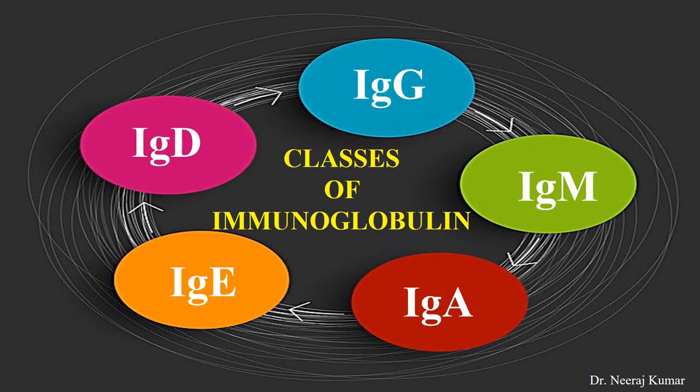Hello everyone. In this video we will discuss the classes of immunoglobulin, or you can say classes of antibody, that is IgG, IgD, IgM, IgA, and IgE. So without any delay let's get started.